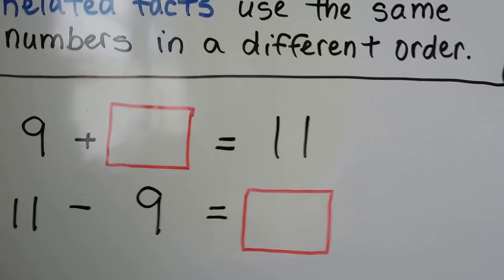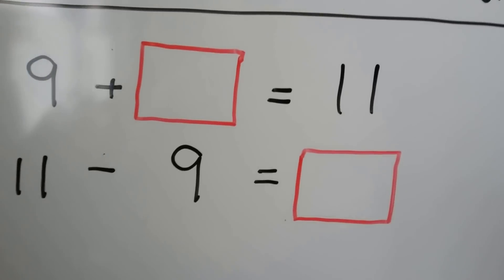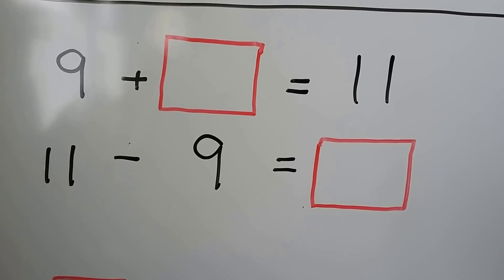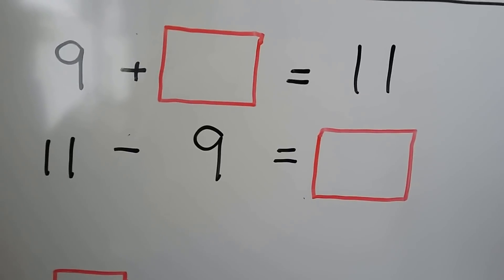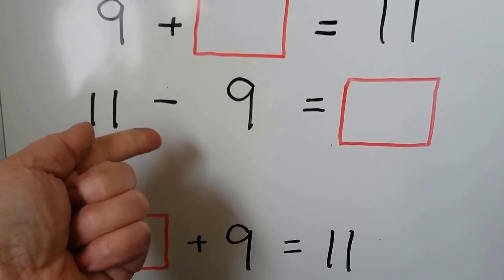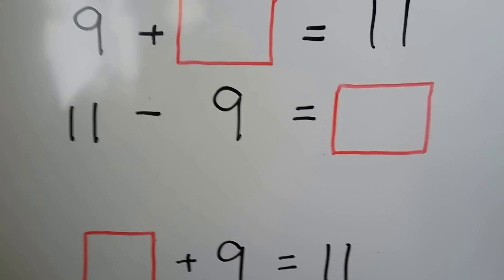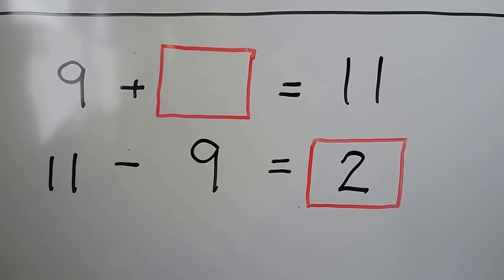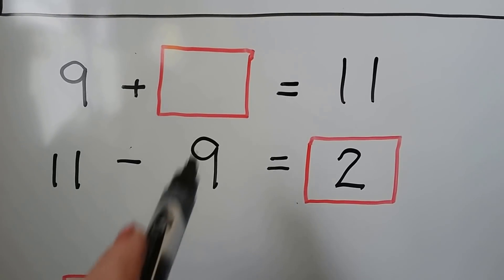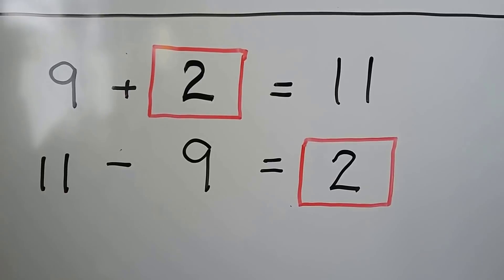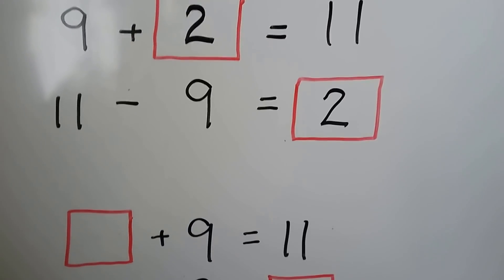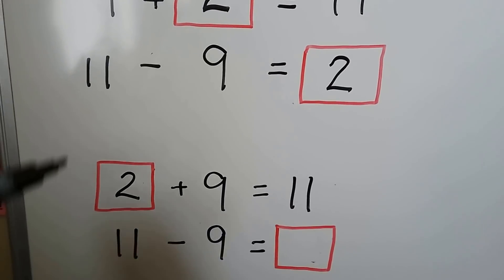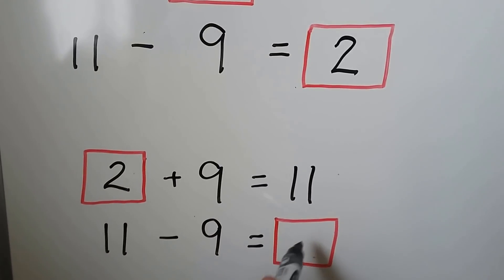So we can use a related fact to find an unknown number. 9 plus some number is equal to 11 — we can do 11 minus 9 to find the unknown number. We count up: 9, 10, 11 — that's 2. So 11 minus 9 equals 2. Related facts use the same numbers in a different order, so 2 plus 9 equals 11, and 11 minus 9 equals 2. We put 2 in the cube.